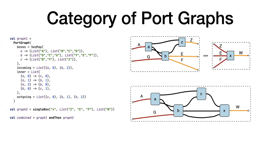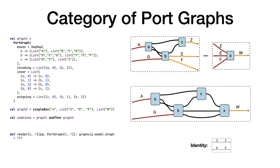We can define the categorical structure here — we have a combined graph. The identity arrow in this category is just wires, with one identity for each number of wires. With this structure in place, it becomes much more manageable to render to something like graphics, which can otherwise be very messy. This is just a way to make it much easier. And that's it — that's all I have.